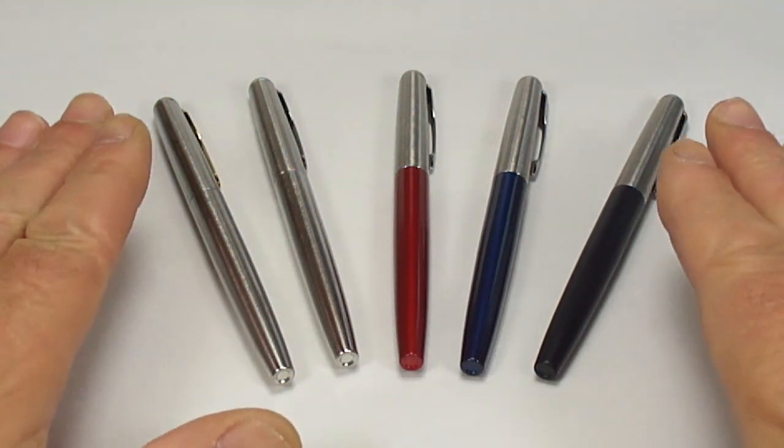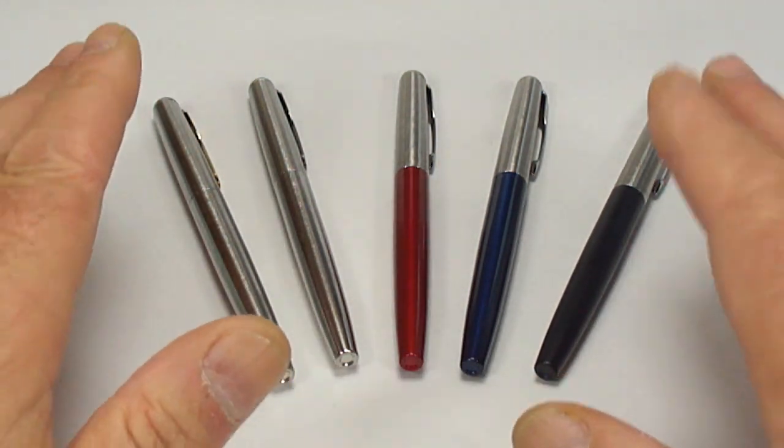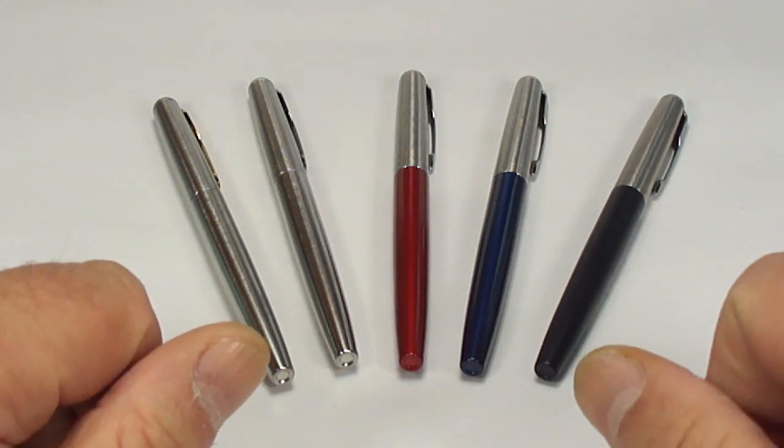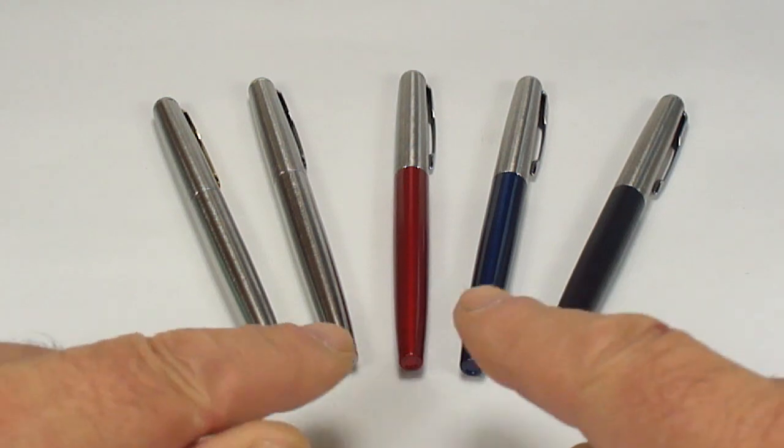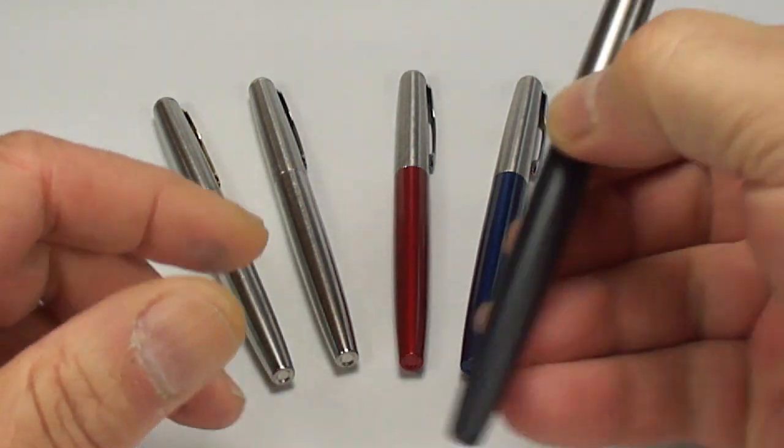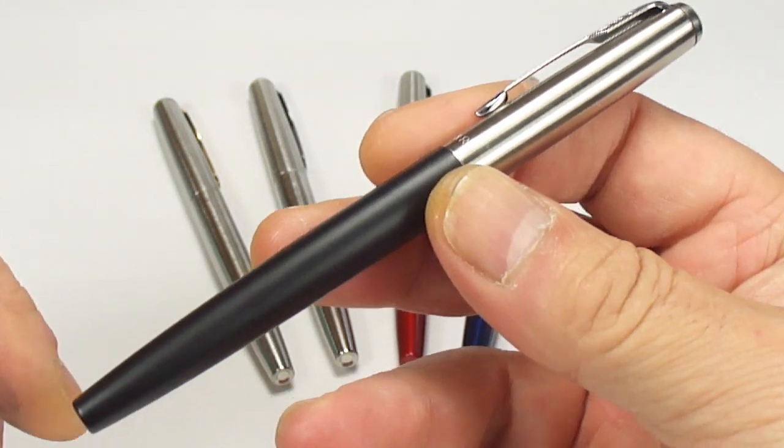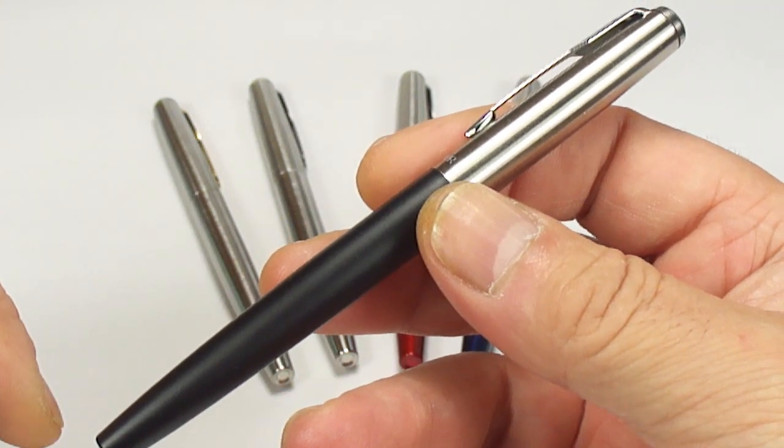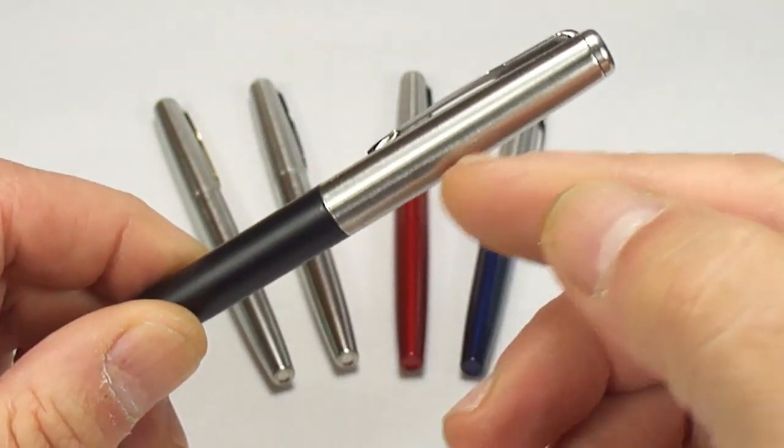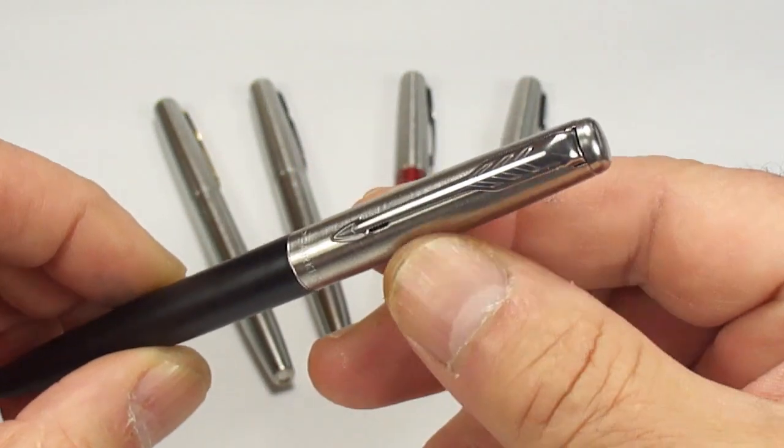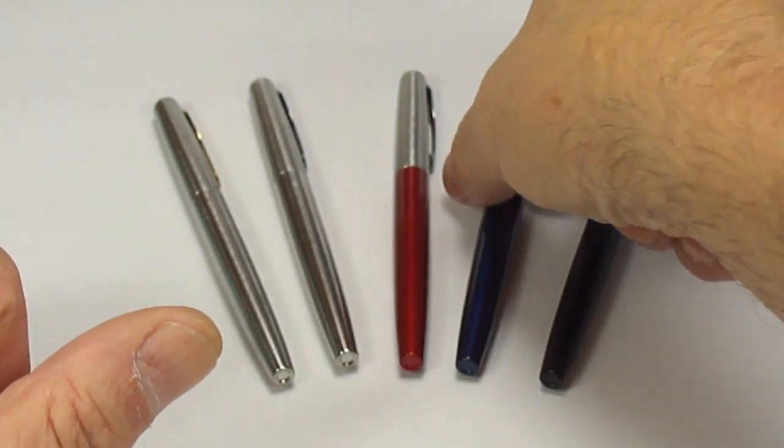So here we have the five pens or colors available from the Parker Jotter London collection of fountain pens. The first one that we've just shown you is the black one and this is what Parker term as the Bond Street black, black stainless steel trim and a chrome clip.